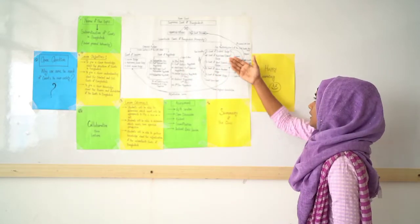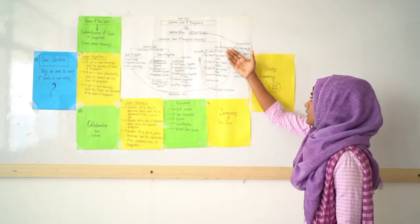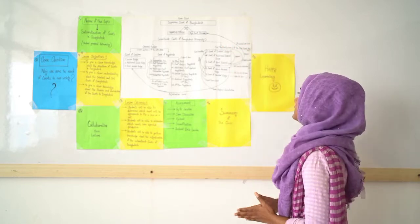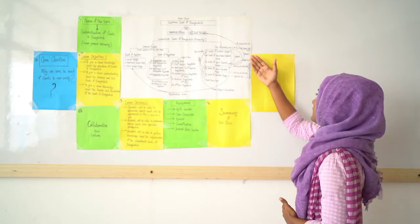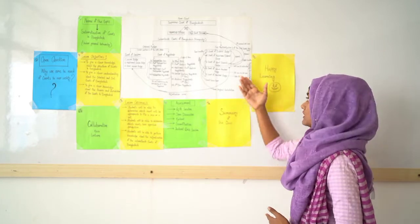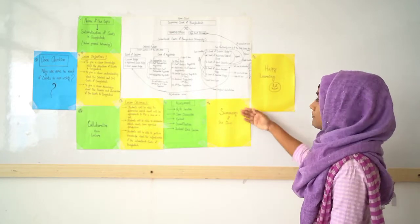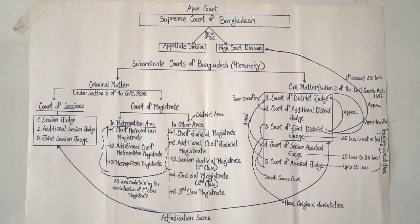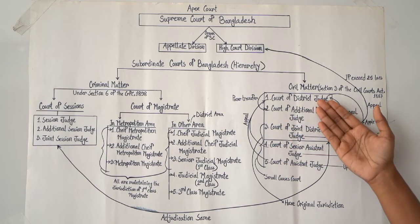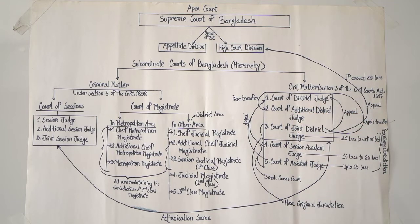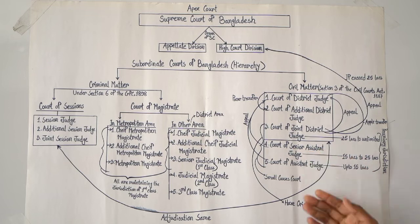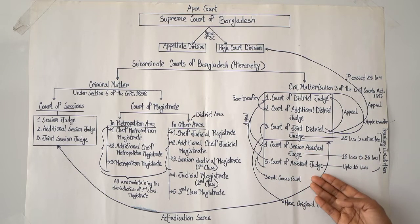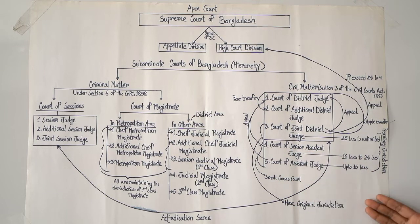Now moving to civil matters: under section 3 of the Civil Courts Act 1887, the whole structure of the courts of Bangladesh is as follows — at the top is the Court of District Judge, then the Court of Additional District Judge, then the Court of Joint District Judge, then the Court of Senior Assistant Judge, and then the Court of Assistant Judge.